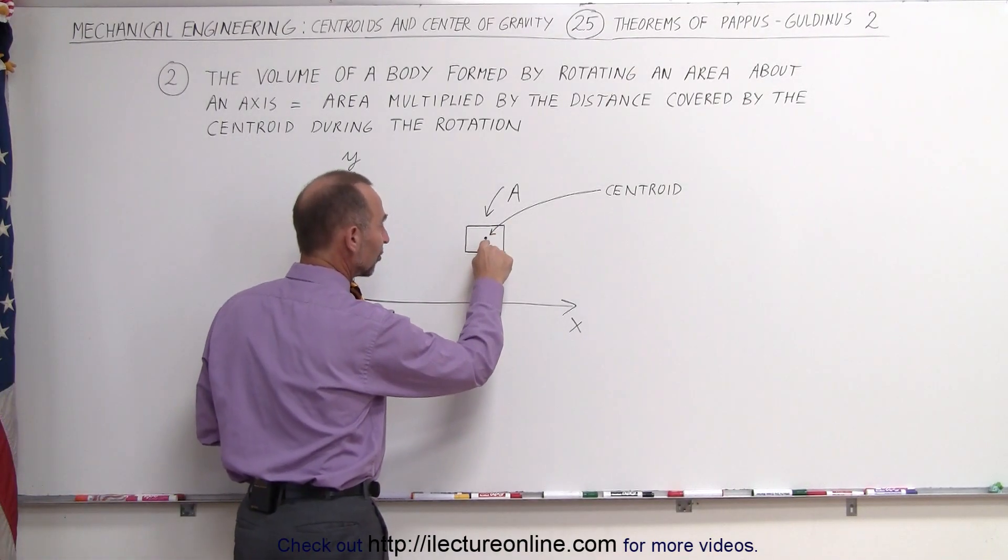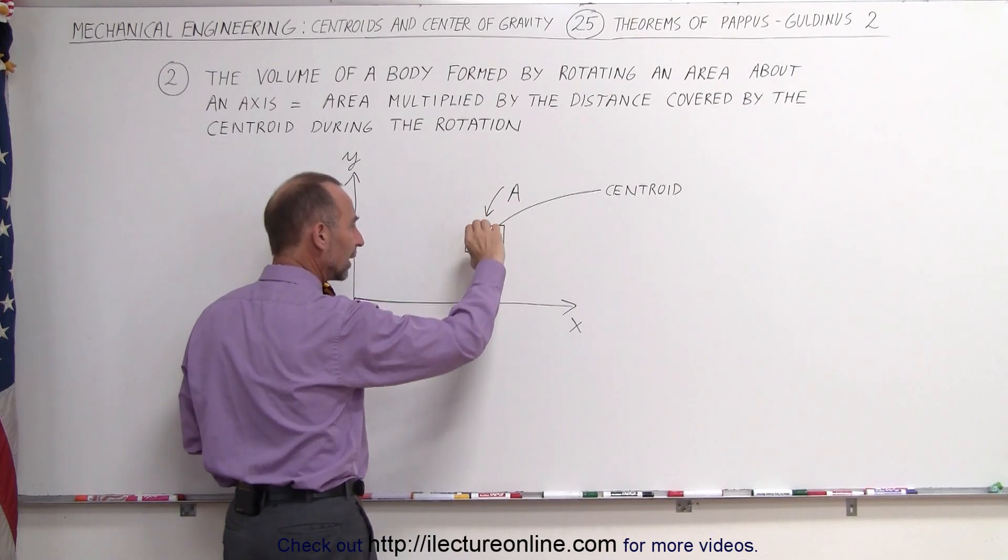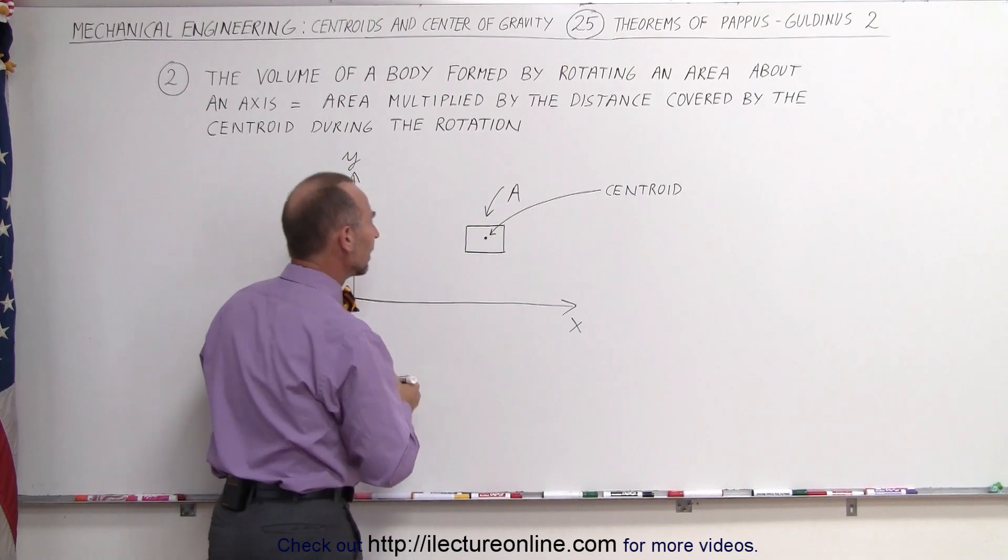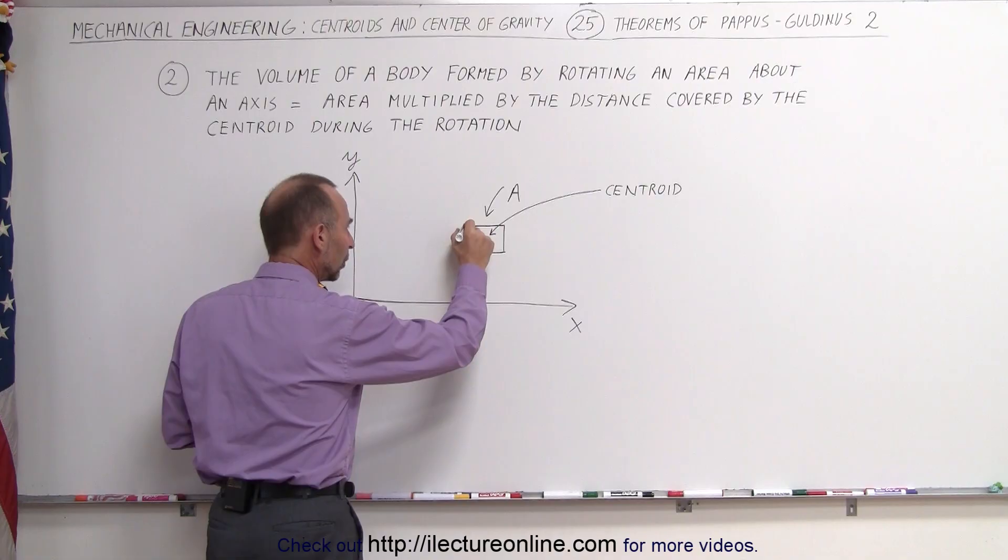Here we have an area. Here's the centroid of the area. We're going to rotate that about the x-axis. The object that we end up with will look like this.